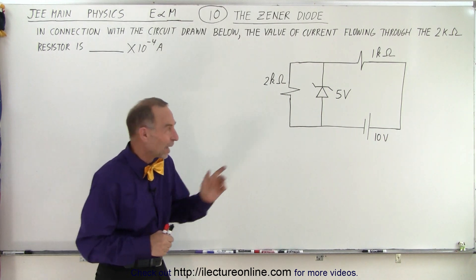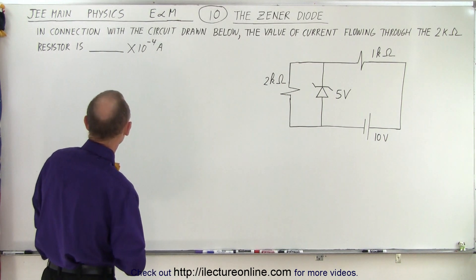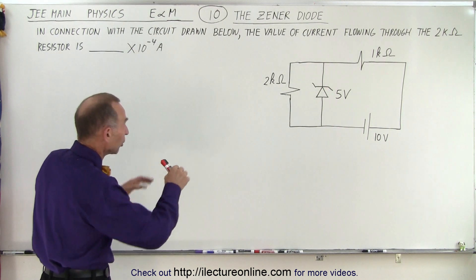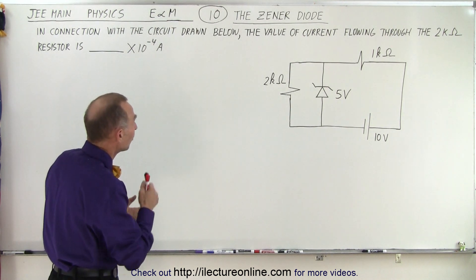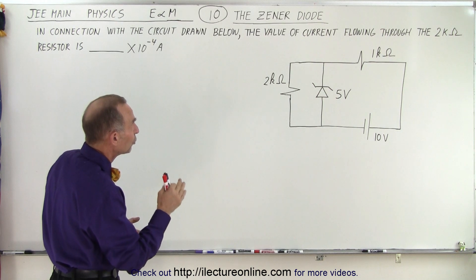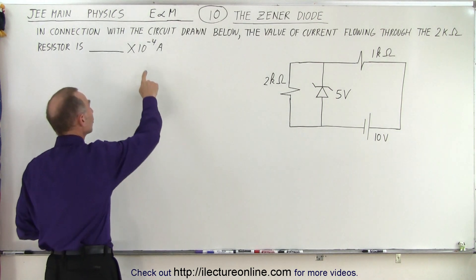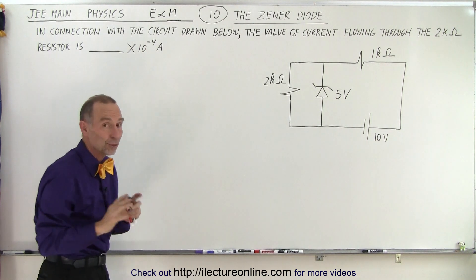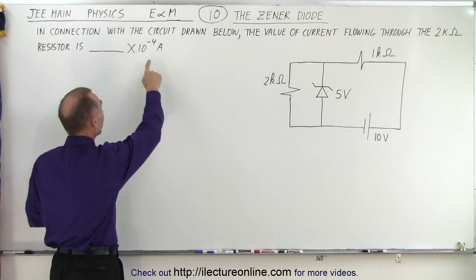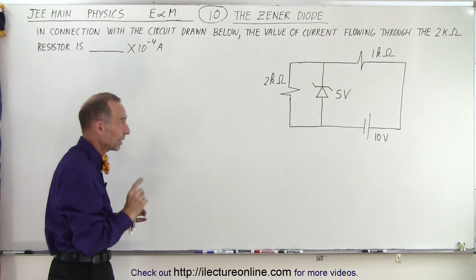In connection with the circuit drawn below—they did provide the circuit—the value of current flowing through the 2 kilohm resistor is... Notice they have it in terms of 10 to the minus 4 amps, and your answer may not have 10 to the minus 4, so you'll have to convert it. Always be careful about that.